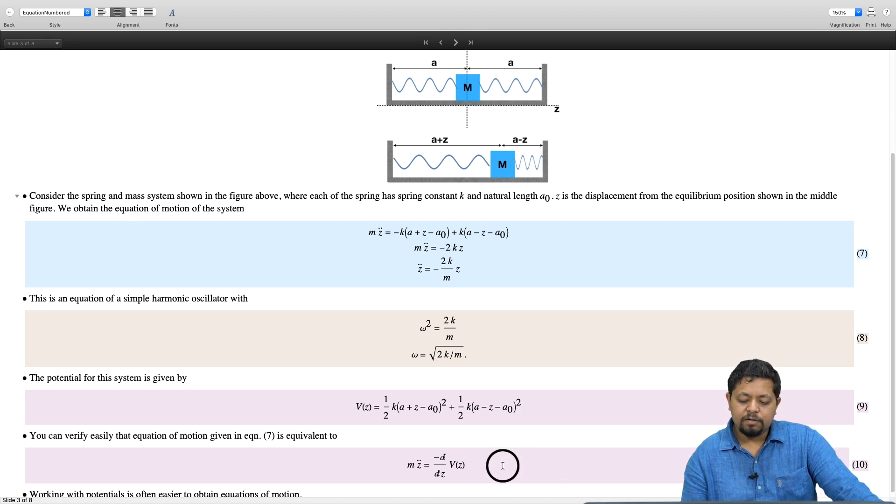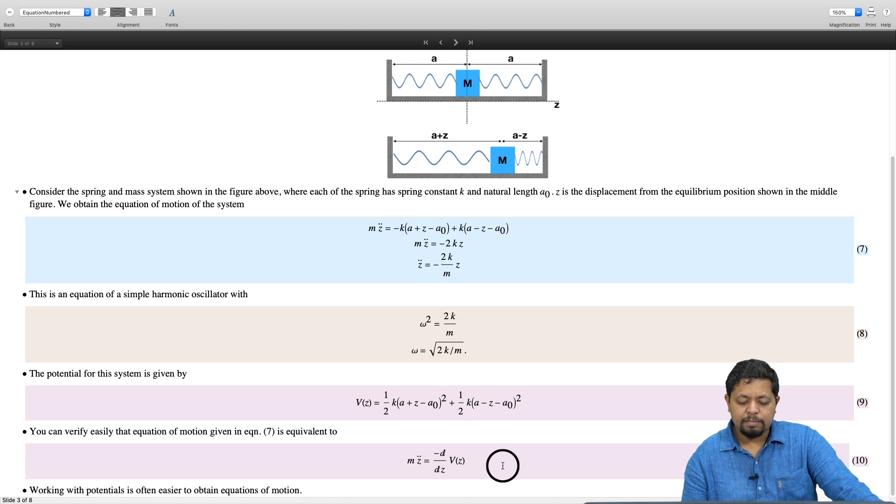You calculate the derivative of the potential and you will find that you will get the same equation as before. When you simplify this equation, you will see that the resultant equation will be that.